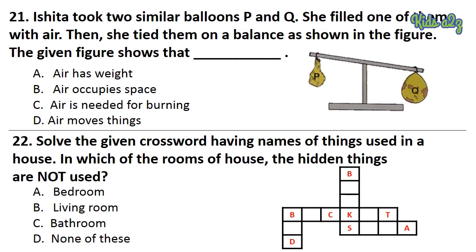Question 21: Ishita took two similar balloons P and Q. She filled one of them with air, then tied them on a balance as shown in the figure. The given figure shows that dash. The answer is Option A — Air has weight. Question 22: Solve the given crossword having names of things used in a house. In which of the rooms of the house are the hidden things not used? The answer is Option D — None of these.